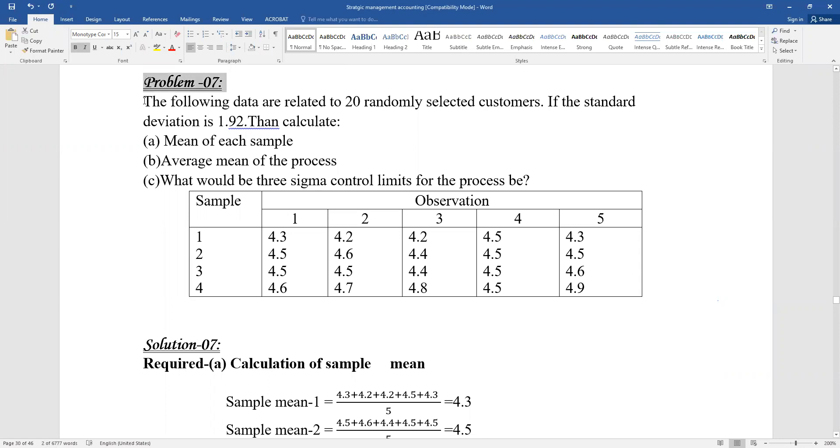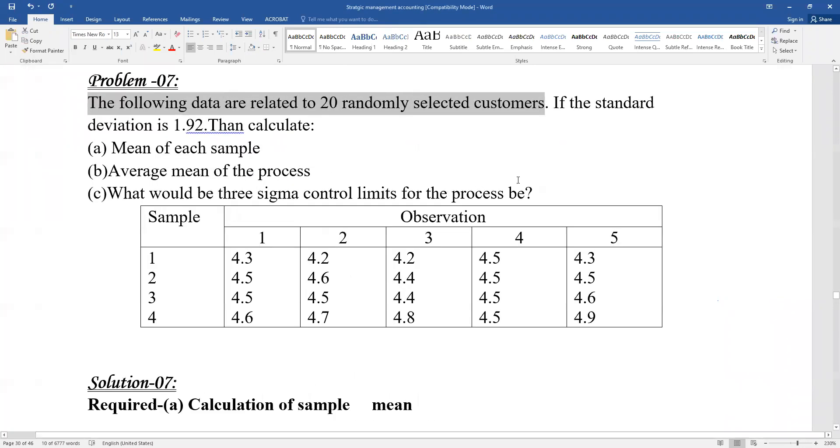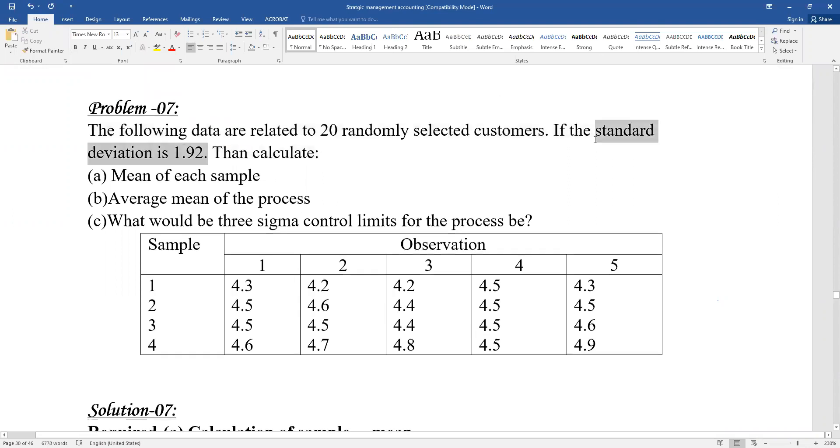Problem 07: The following data are related to 20 randomly selected customers. If the standard deviation is 1.92, then calculate the following.